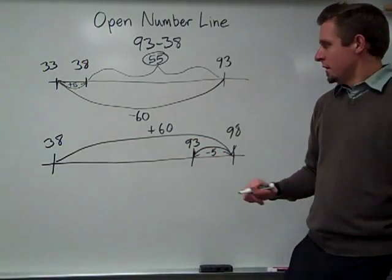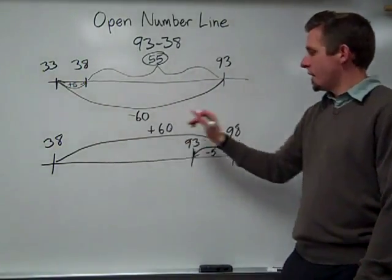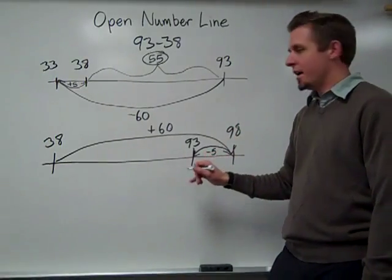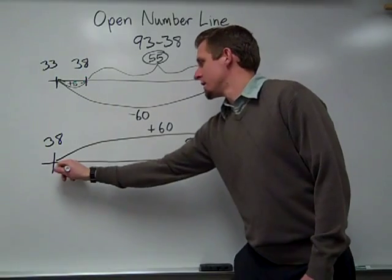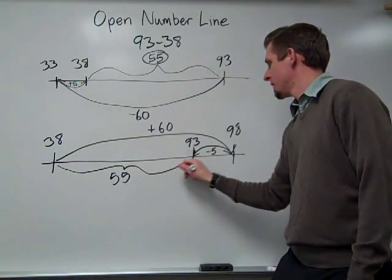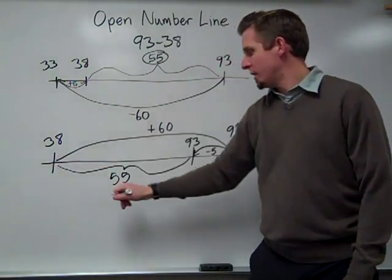So then the difference, if I went up 60 and back 5, that would be a total of 55. So the distance between 93 and 38 is 55.